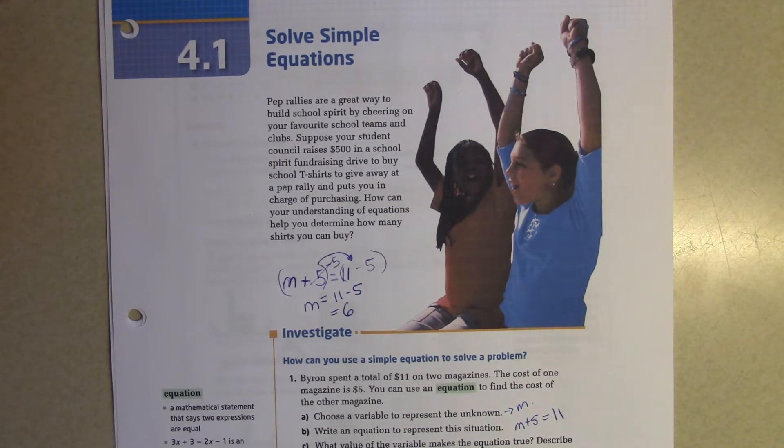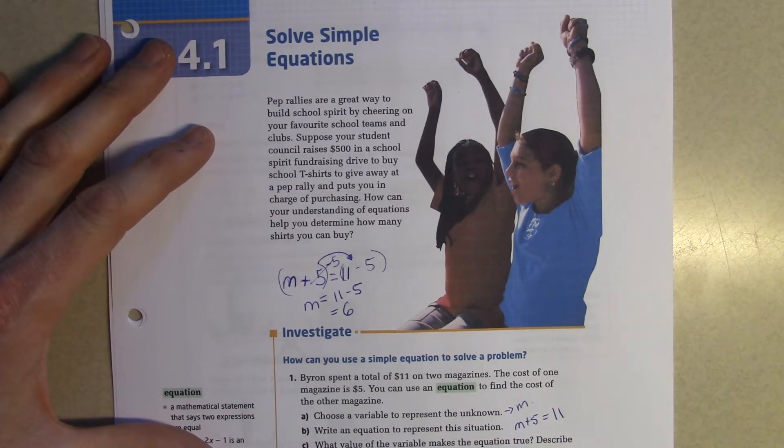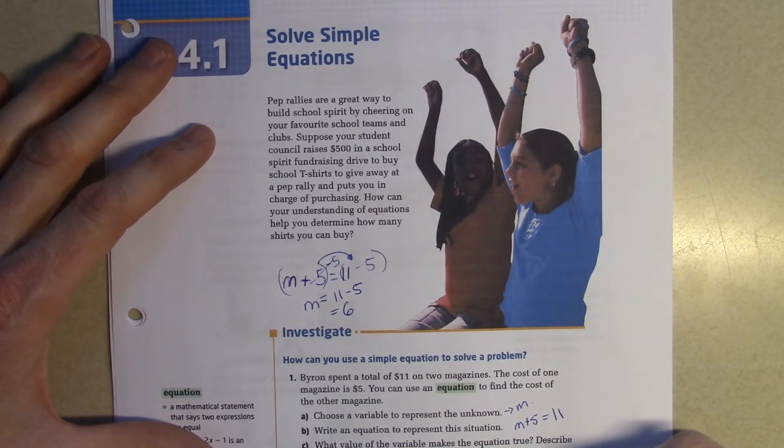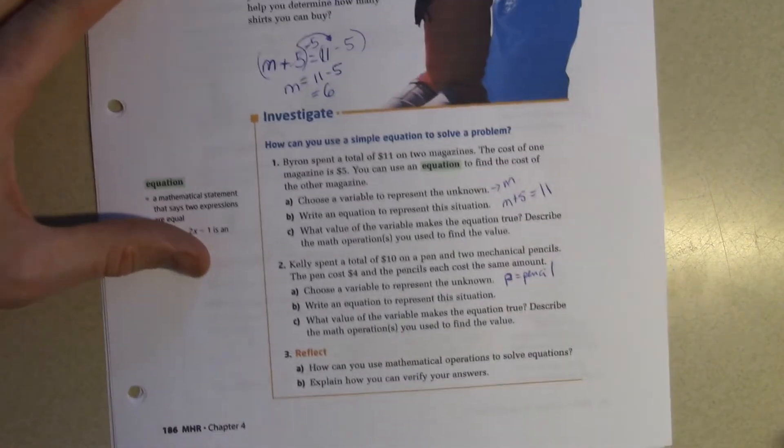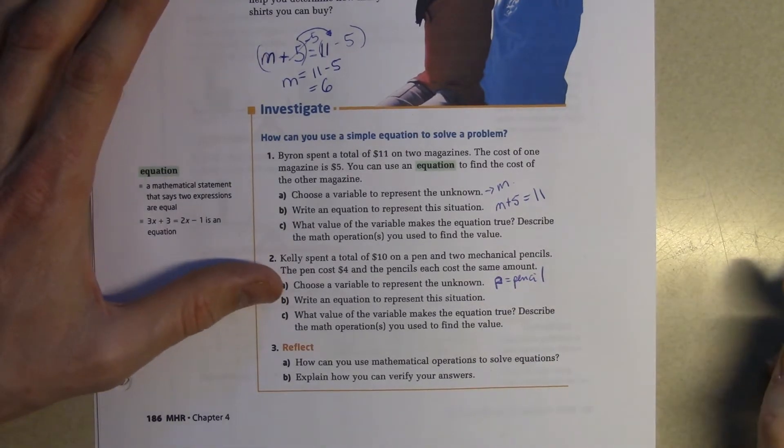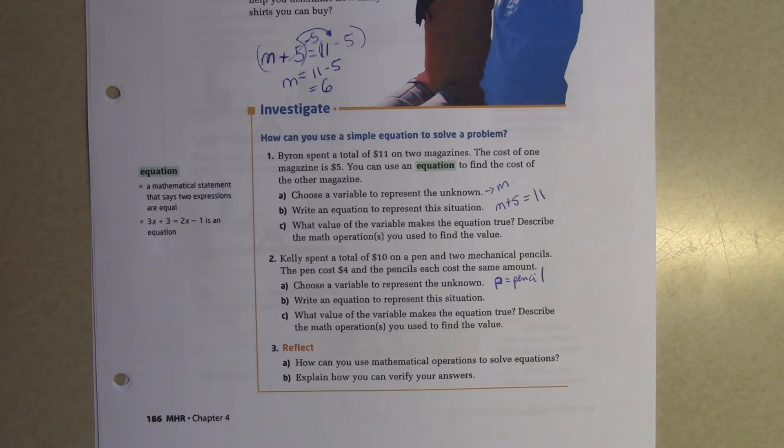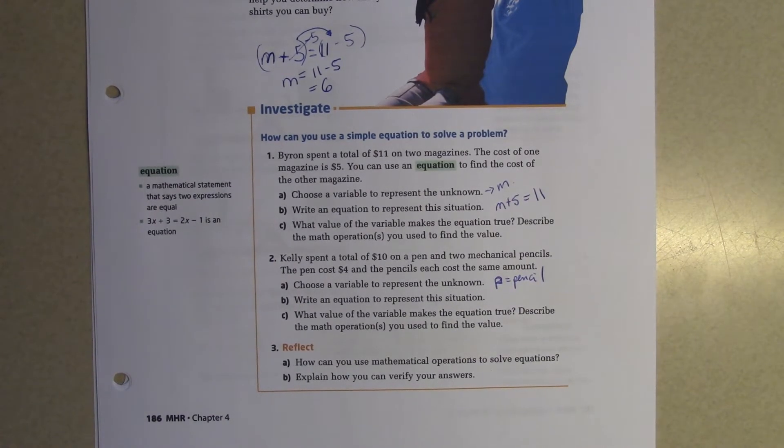Next it says Kelly spent a total of $10 on a pen and two mechanical pencils. The pen cost $4 and the pencils each cost the same amount. Choose a variable to represent the unknown. We know the pen is $4, so we don't need anything for that. The two mechanical pencils, we can call those P. Write an equation to represent this situation. She spent a total of $10, so who can tell me the equation we would write, Christian in the back?